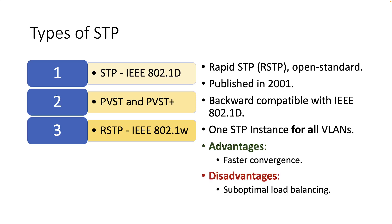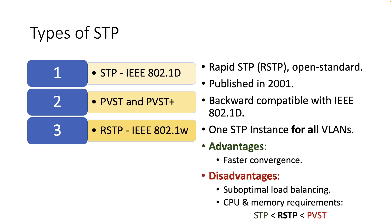However, like STP, it creates only a single instance of spanning tree for the entire Ethernet network and, therefore, does not address the previously mentioned suboptimal traffic flow issues of the original STP. Furthermore, the CPU and memory resources required in Rapid STP is higher than the original STP, but less than the PVST.